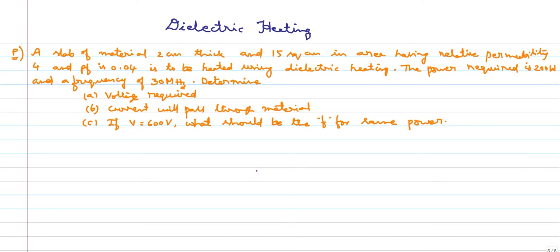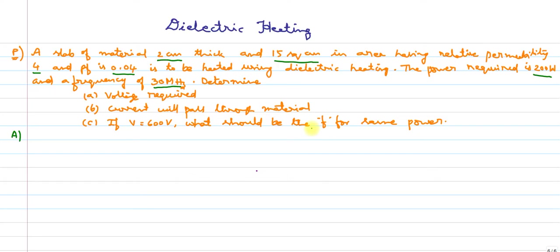Today we will see one problem on dielectric heating. A slab of material 2 centimeters thick and 15 square centimeters in area, having relative permittivity of 4 and power factor of 0.04, is to be heated using dielectric heating. The power required is 200 watts at a frequency of 30 megahertz. Determine: (1) voltage required, (2) current through the material, and (3) if voltage is 600 volts, what should be the frequency for the same power.